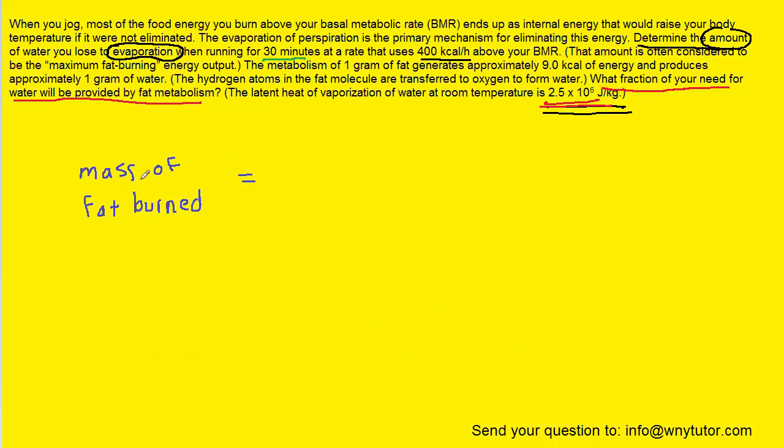So what does this all mean? Well, what it means is that we first have to figure out the mass of fat burned. Remember, the question noted that when 1 gram of fat is burned, that produces 1 gram of water. So in essence, if we find the mass of fat burned, we're also finding the mass of water produced.